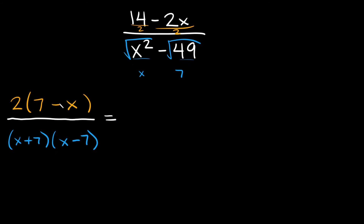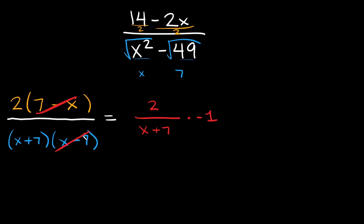Now that we've factored the top and bottom, we can see opposite factors: 7 minus x on top and x minus 7 on the bottom. Those reduce to negative 1. What's left is 2 on top and x plus 7 on the bottom, multiplied by negative 1. So 2 over (x plus 7) times negative 1 equals negative 2 over (x plus 7). That's your final answer.